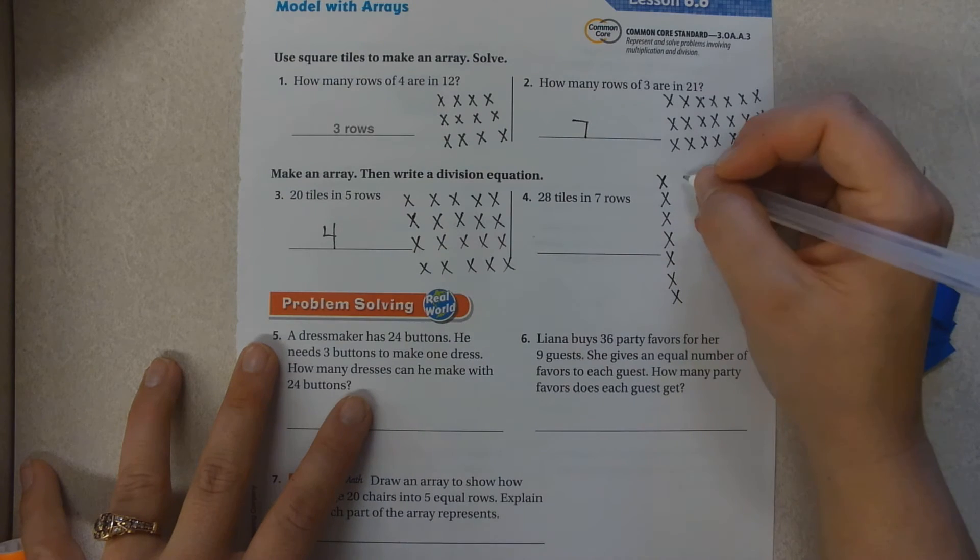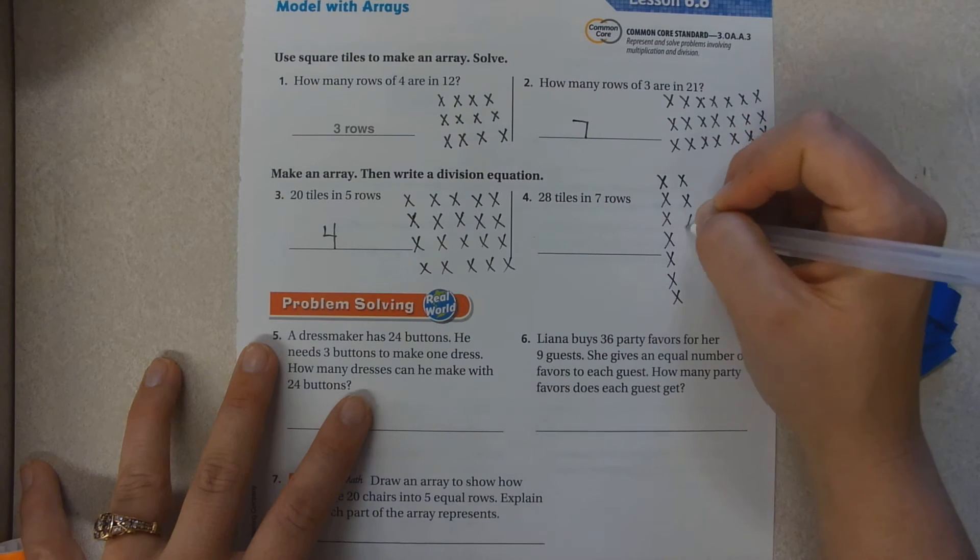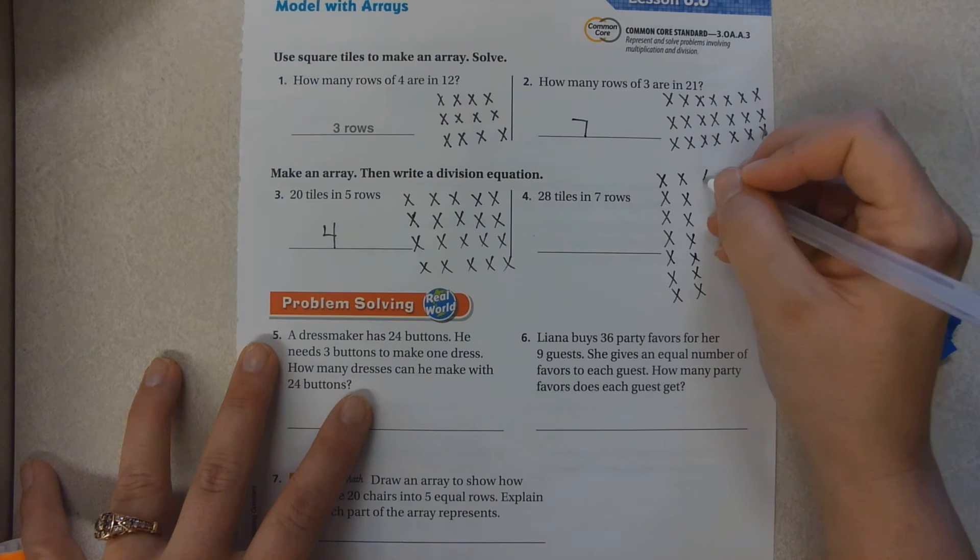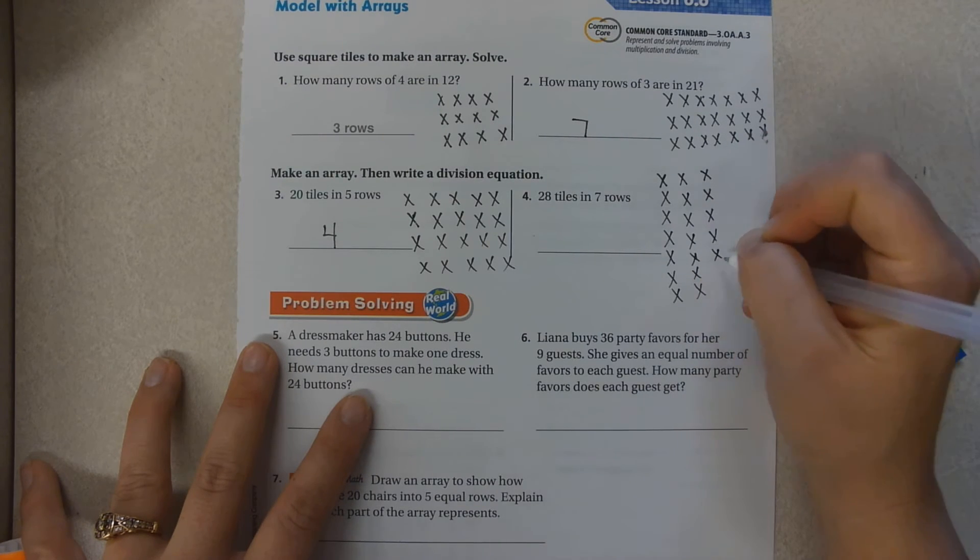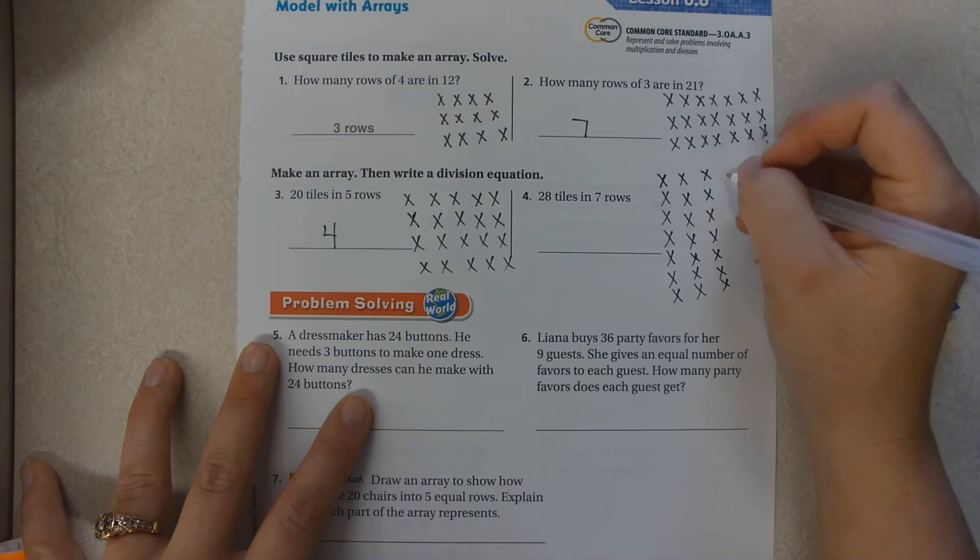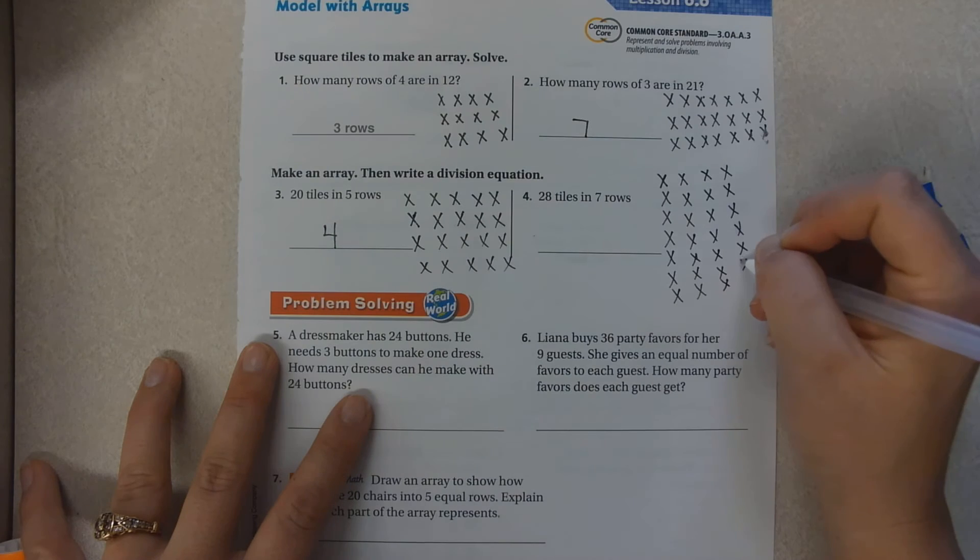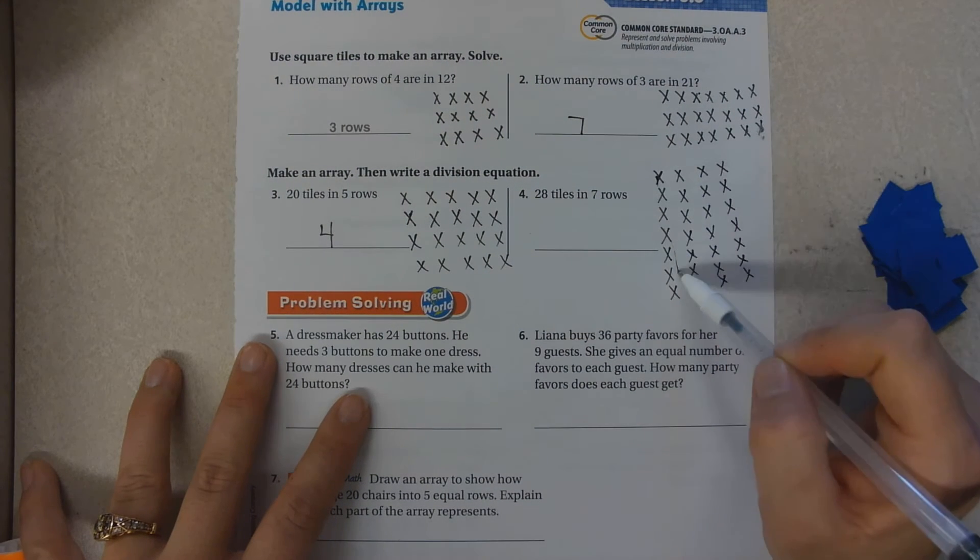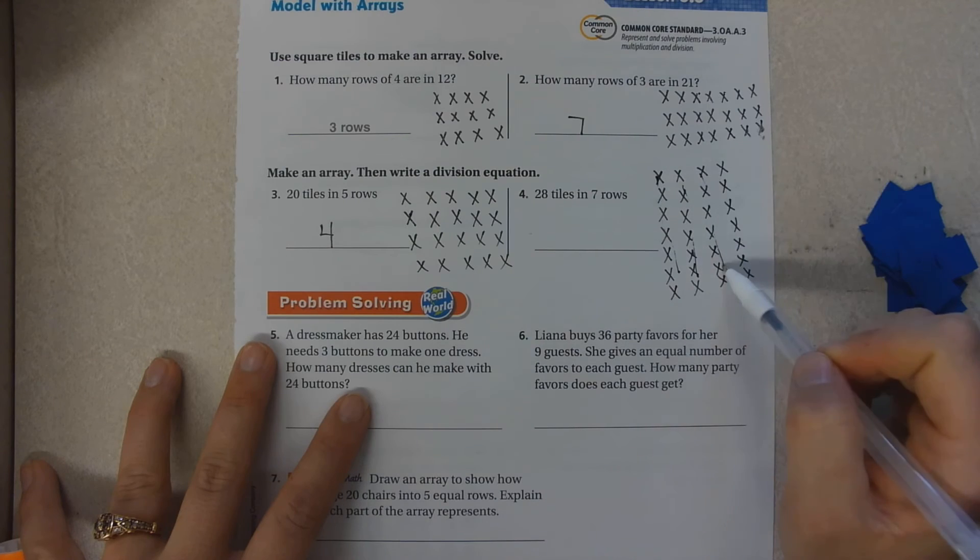Seven, eight, nine, ten, eleven, twelve, thirteen, fourteen, fifteen, sixteen, seventeen, eighteen, nineteen, twenty, twenty-one, twenty-two, twenty-three, twenty-four, twenty-five, twenty-six, twenty-seven, twenty-eight. So I have one, two, three, four groups.